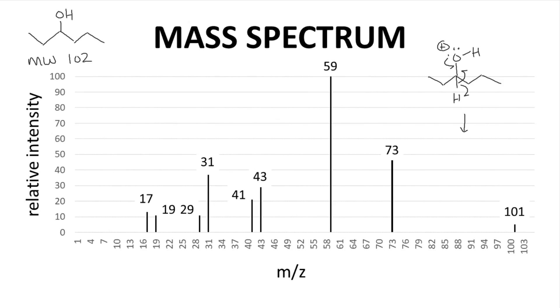The resulting cation of 101. That's M minus 1, loss of a hydrogen atom.